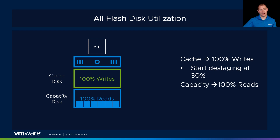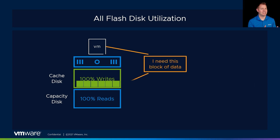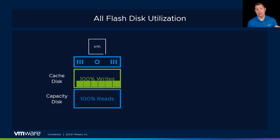For reads, we return that block of data back directly from our capacity tier. Since we've got all SSDs or all NVMes, we should get it straight from the capacity tier. One scenario you might think about is: what if that block of data is in our cache disk write tier but hasn't been de-staged down to the capacity tier? vSAN would say, 'I see this block of data is located here in the write tier in our cache disk — I'll just send it directly back from our cache disk.' Not a big deal.